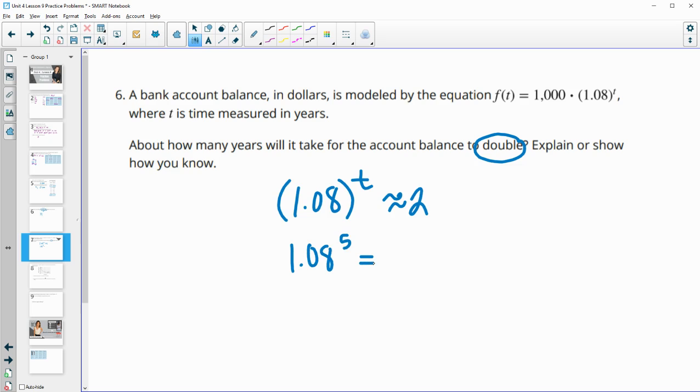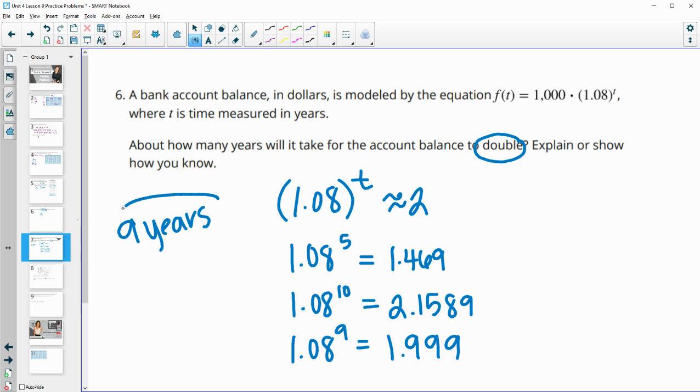So I'm going to do 1.08 to the fifth. So this will be after five years. Our growth factor is 1.469. So then I'm going to try 1.08 to the 10th, and this gets me 2.1589, which is a little bit more than double. So then I want to try 1.08 to the ninth to see if that gets closer, and this gives me 1.999. So that is closer to double. So it'll take approximately nine years to double.